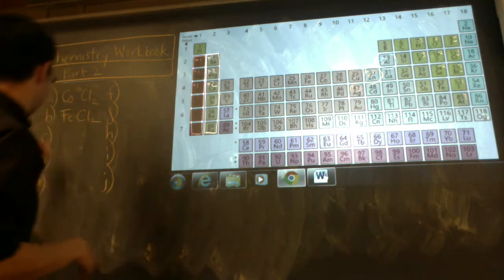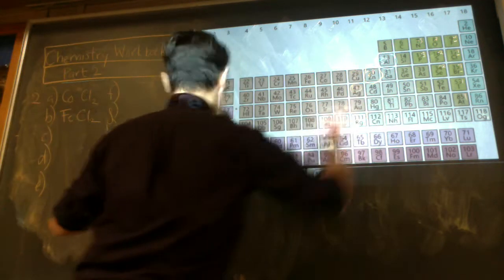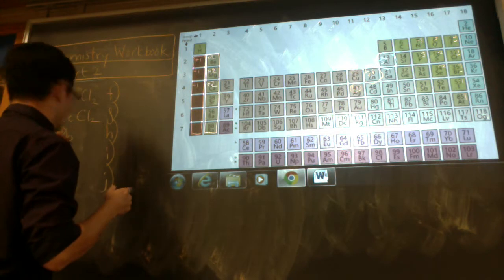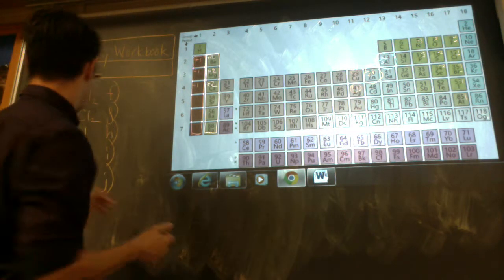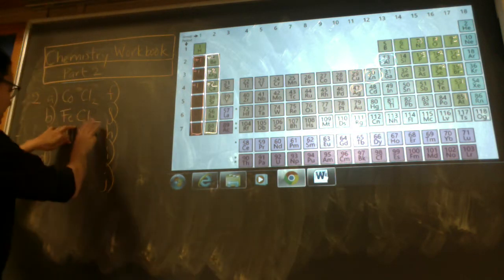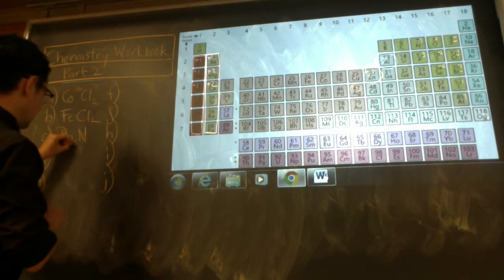Lead(II) nitride. Lead is Pb. Nitride is nitrogen with a 3- charge. The name tells us it's lead 2+ and nitrogen 3-. So it's going to be 3 and 2: Pb3N2.